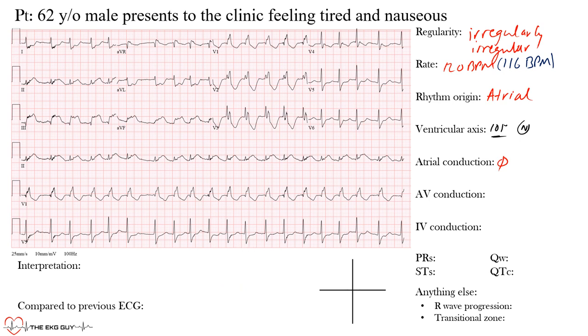For AV conduction, we would look at the PR interval — but again, since we have no P waves, we cannot assess it, so we skip through this section.